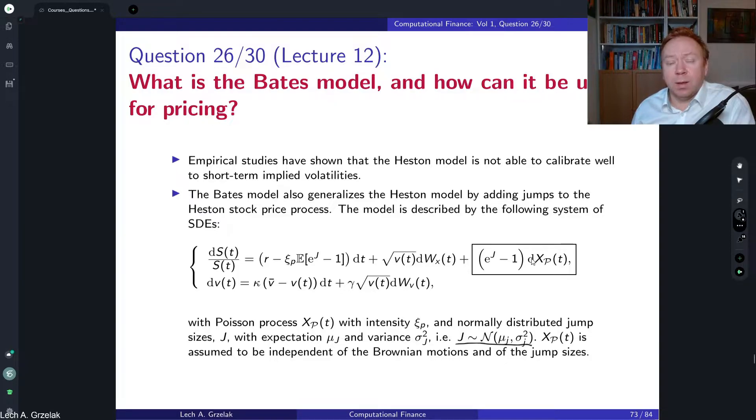The reason why it's independent is actually because of the characteristic function. If we have the characteristic function of a Bates model, we can actually easily see that it's just a product of the Heston model and the jump component. So this is the meaning. If you would like to correlate the two, that becomes a very difficult task of correlating the Poisson process or jump part with Brownian motion. For that, the characteristic function would be much more involved to derive.